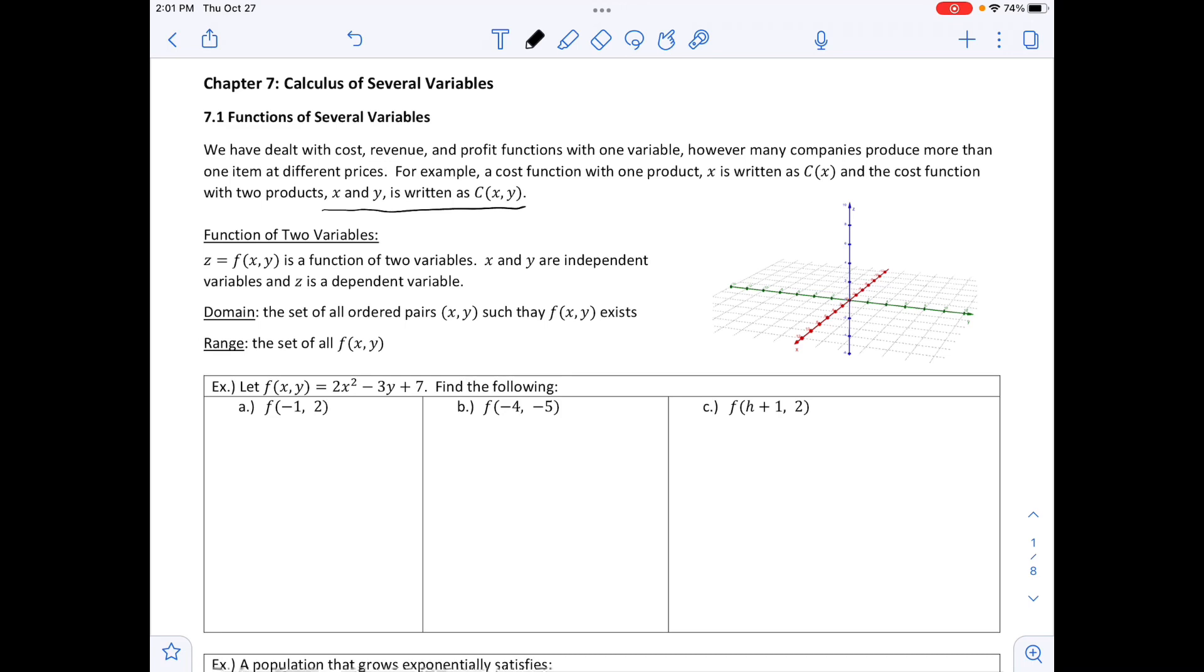Okay, so for this, you can see on the right, we have three different axes, and this is going to be a three-dimensional shape. And so we have an example right below that says, let F of X, Y equal 2X squared minus 3Y plus 7.